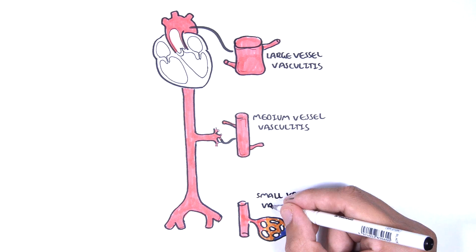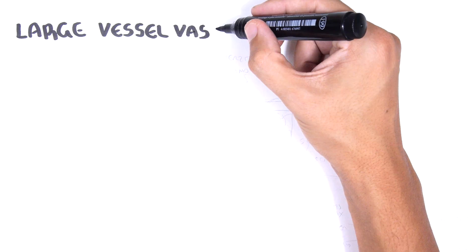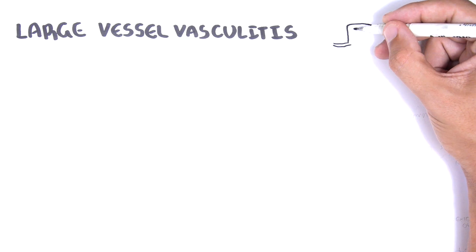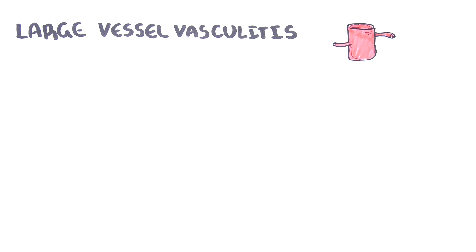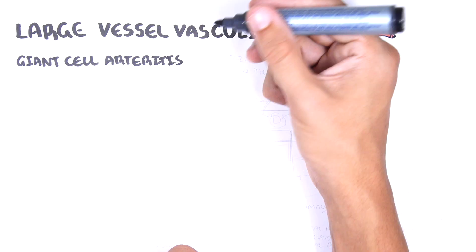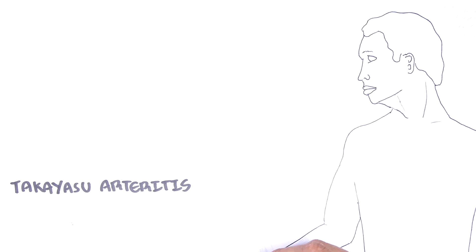In this video we're going to focus on large vessel vasculitis, which typically affects the aorta and its main branches. The large vessel vasculitides include giant cell arteritis and Takayasu arteritis.